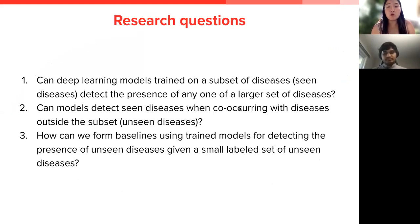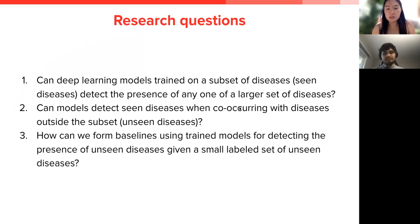In this project, we want to answer three questions. One, can deep learning models trained on a subset of diseases — namely seen diseases — detect the presence of any one of a larger set of diseases? Two, can models detect seen diseases when co-occurring with diseases outside of the subset, namely unseen diseases? Three, how can we form baselines using trained models for detecting the presence of unseen diseases given a small label set of unseen diseases?